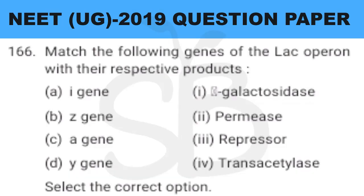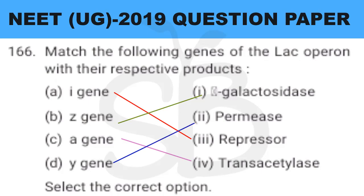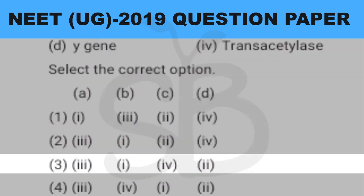Question number 166: match the following genes of lac operon with their respective products. Option A: I gene produces repressor protein. Option B: Z gene produces beta-galactosidase. Option C: A gene produces transacetylase. Option D: Y gene produces permease. So the correct answer is option 3: A3, B1, C4, and D2.